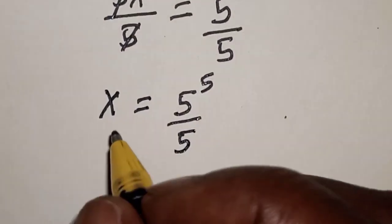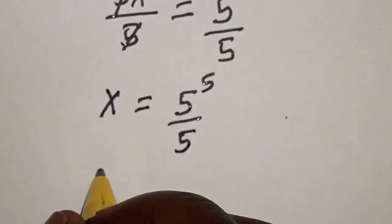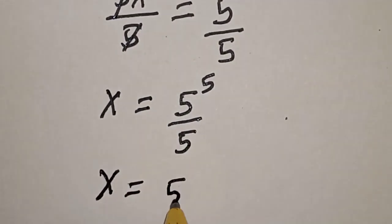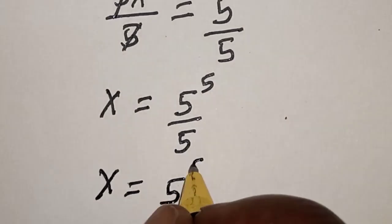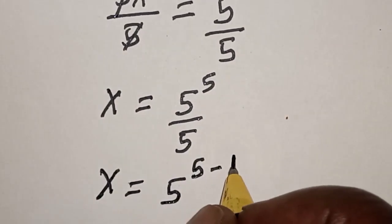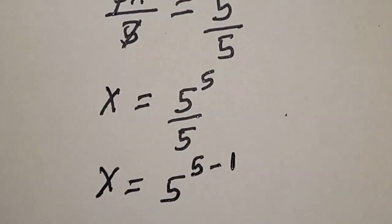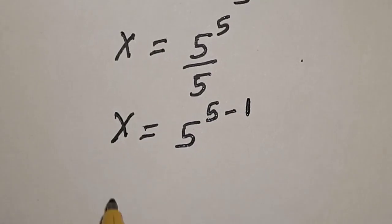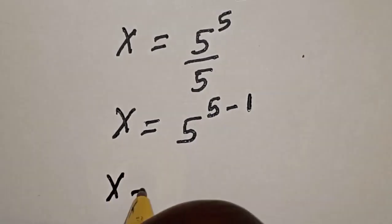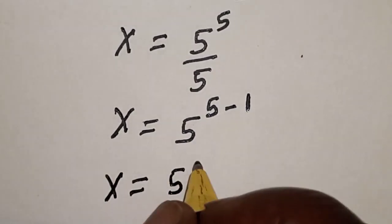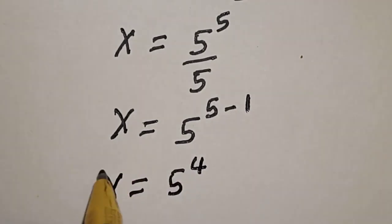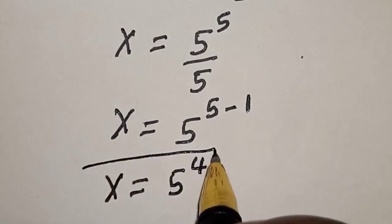Then, this is equal to 5 raised to power 5 divided by 5, which is equal to 5 raised to power 5 minus 1. Therefore, s is equal to 5 raised to power 4. That is our final answer.